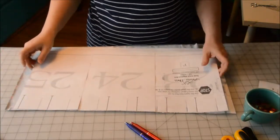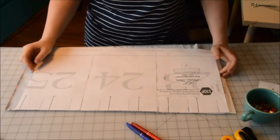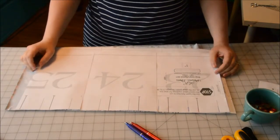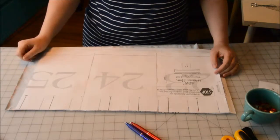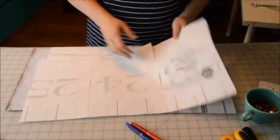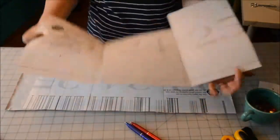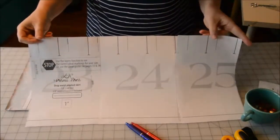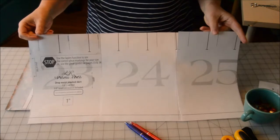First things first, you'll print out your pattern. If you are able to use a layers function, I highly recommend just selecting the layer that you need. So when you print your pleated skirt out, your markings are much more legible, and you can see exactly where you need to mark.